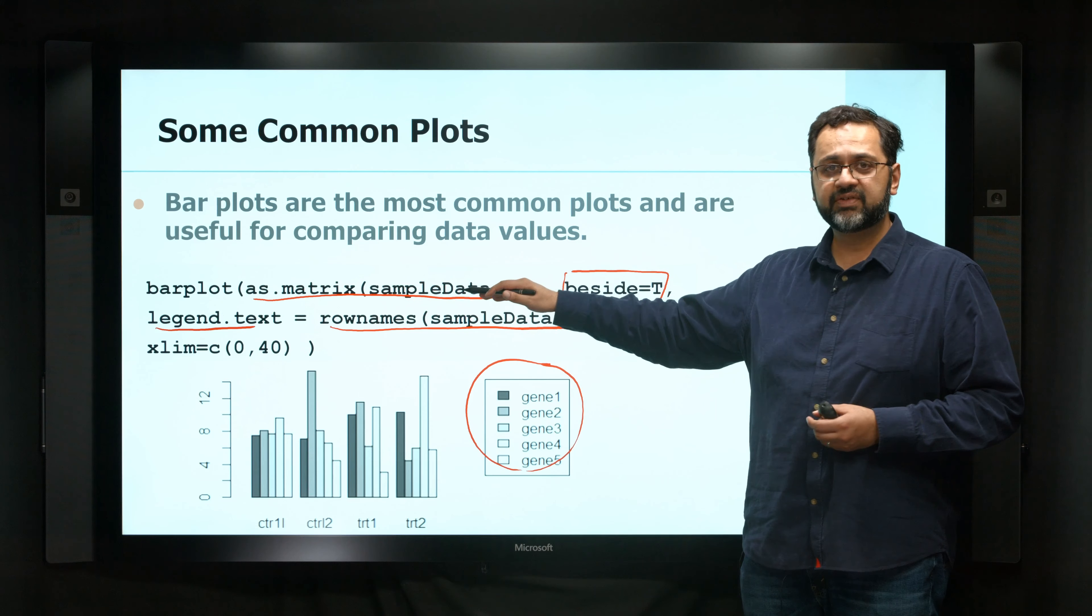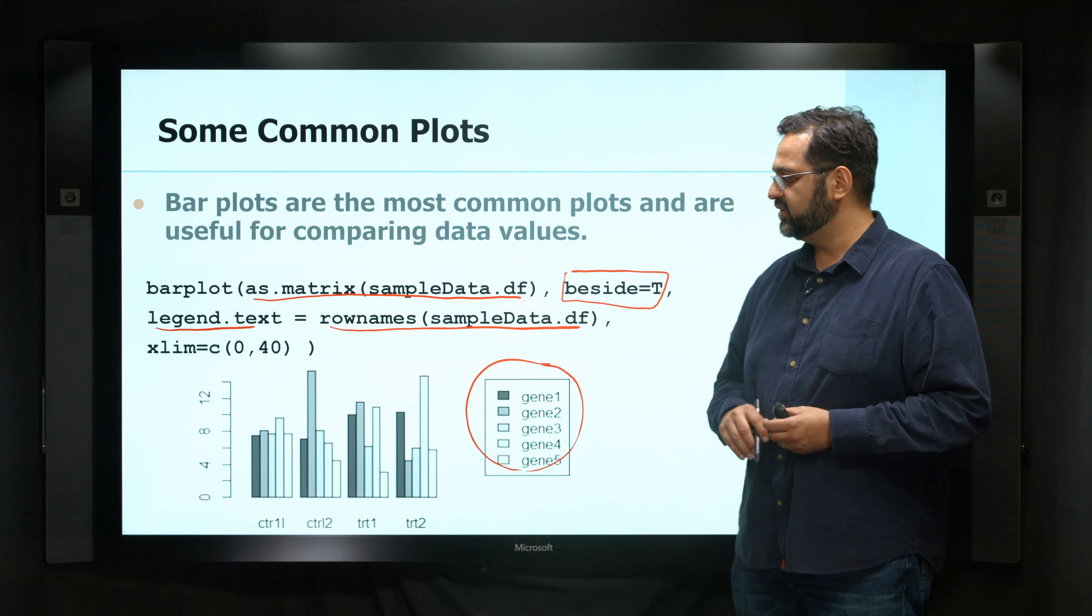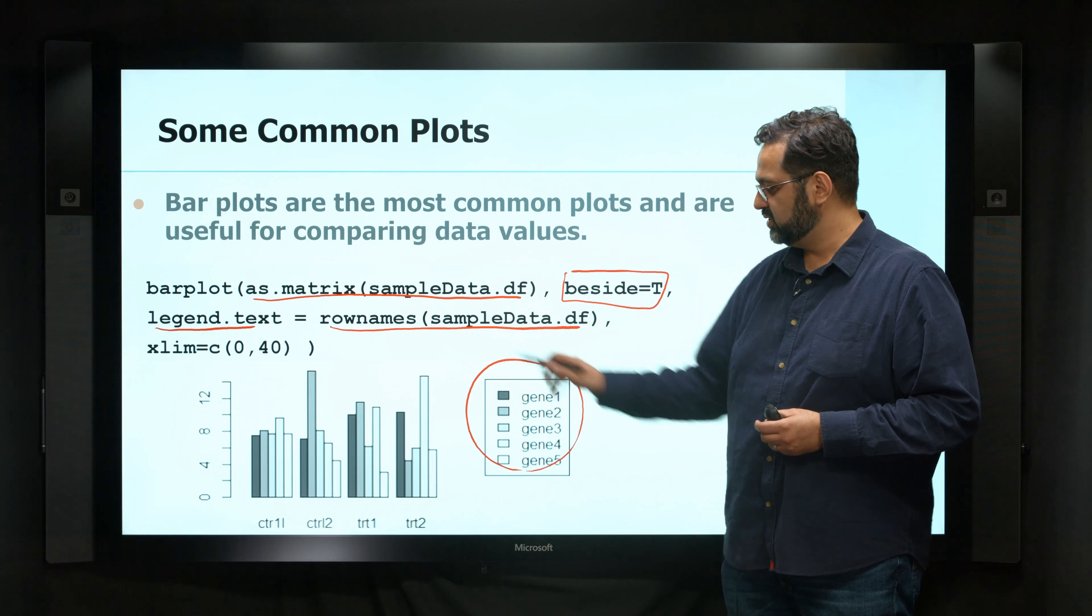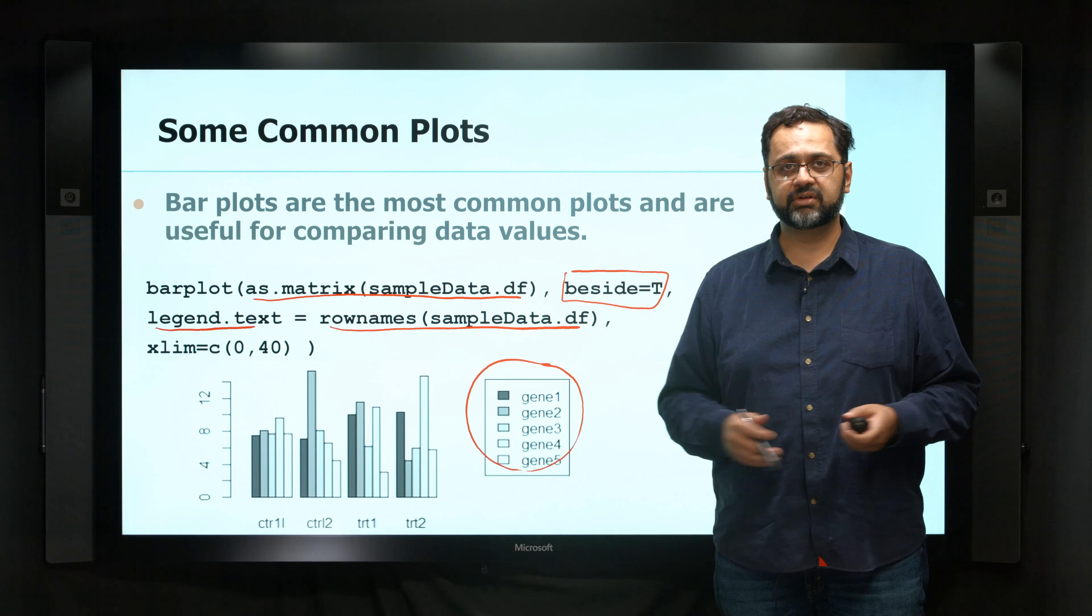So that's all it was. It's just a bar plot. Give it a matrix. Tell it to do it side by side, the different values. Tell it what the legends are or where they are. And also how wide to make the graph.